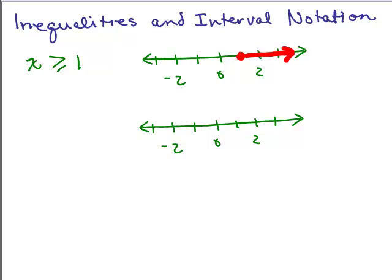There's a completely different notation where you show, using either parentheses or brackets, the smallest number and the largest number in the inequality. In this particular problem, the smallest number is 1, and if it actually is equal to 1, we start off with a bracket. A bracket means this is the very smallest number of the solution — 1.